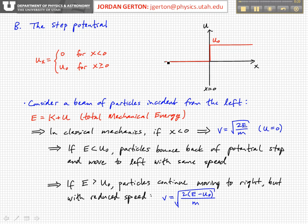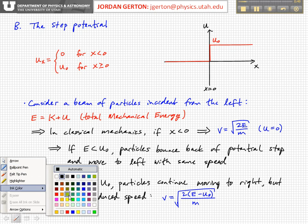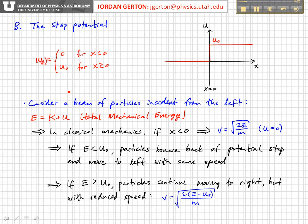The step potential is shown in a general way over here on the right. We basically set up the geometry such that we have a discontinuous increase in the potential energy from zero to a value U naught at X equals zero. So the potential energy is zero when X is less than zero, and it's U naught when X is greater than zero, and it basically extends forever in this manner.